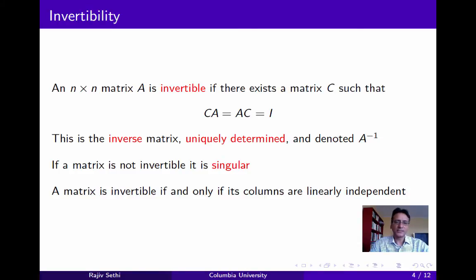A result that we're going to use is the following: a matrix is invertible if and only if its columns are linearly independent. The proof of this is routine and you can look it up, but it's a bit tedious so I'm going to skip it.